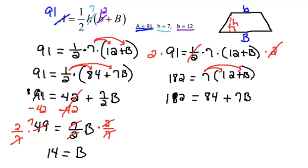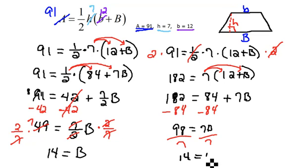So we would have 182 equals 7 times 12 would be 84 plus 7 times b. And then we could subtract 84 from both sides to get 98 equals 7b. And then dividing both sides by 7, we would still get 14 equals b.